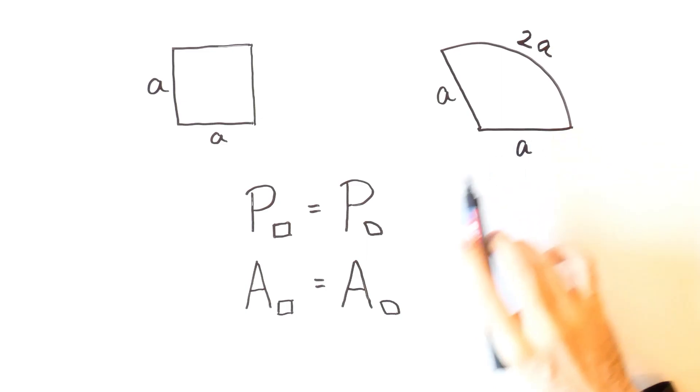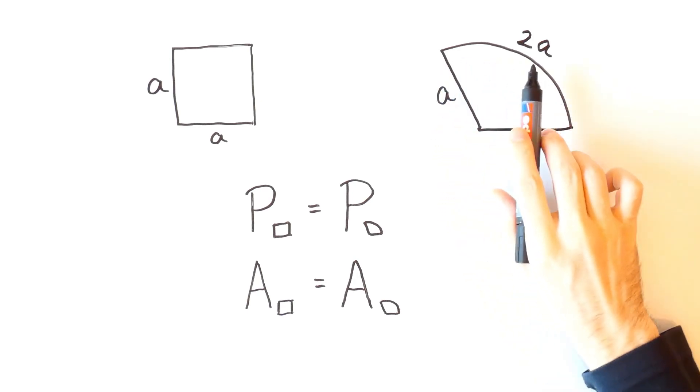So if a sector has the same perimeter and area as the square, then its radius is equal to A while the arc length is equal to 2A.